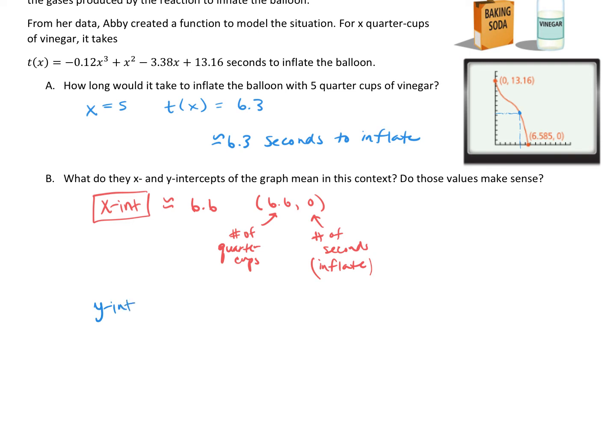How about our y-intercept? The y-intercept was about 13.2. So that ordered pair, the x is 0, the y is 13.2. So in this case, we're saying if we add in 0 quarter cups of vinegar, the balloon will inflate in 13.2 seconds.